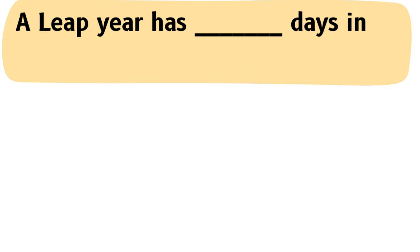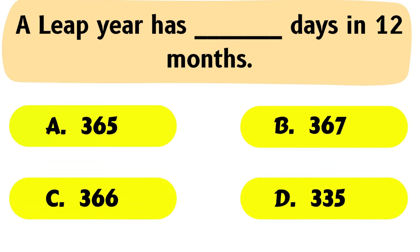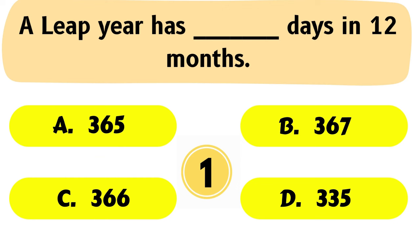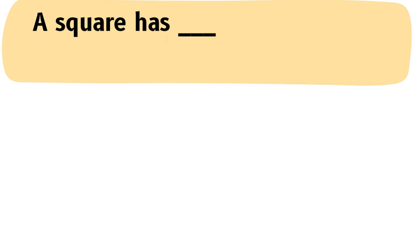Question No. 26: A leap year has ___ days in 12 months. The correct answer is Option C: 366.